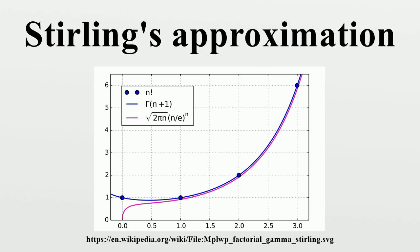The corresponding approximation may now be written. A further application of this asymptotic expansion is for complex arguments z with constant real part. See, for example, the Stirling formula applied in the context of the Riemann-Siegel theta function on the line one-quarter plus it. For any positive integer, introducing notation for error bounds, and for further information and other error bounds, see the cited papers.